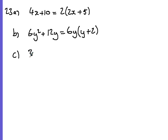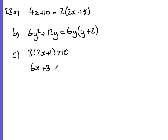Solving the inequality: first step is to expand the bracket — 3 times 2x is 6x, and 3 times 1 is 3. Then we take 3 off 10, which gives 7, and divide by 6. So x is greater than 7 over 6.